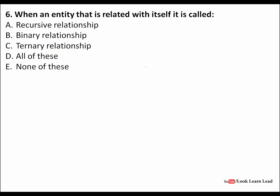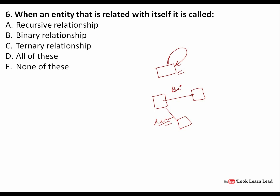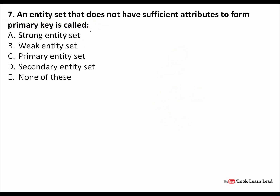When an entity is related with itself, it is called a recursive relationship. When there are two entities it is a binary relation, when three it is ternary. So the answer is recursive. An entity set that does not have sufficient attributes to form a primary key is a weak entity — its primary key is formed by including the strong entity's primary key plus some uniquely defining attributes of the weak entity. Answer is B, weak entity set.